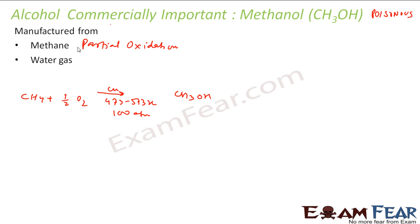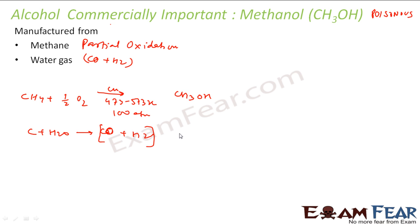The next source is water gas. Water gas is nothing but CO and H₂. To form water gas, you take red hot coke and pass steam over it — by action of steam on red hot coke, you get water gas: carbon plus steam gives CO plus H₂. When this water gas is heated at 573 Kelvin and 200 atm pressure, in the presence of ZnO or Cr₂O₃ as catalyst, you get CH₃OH — methanol.